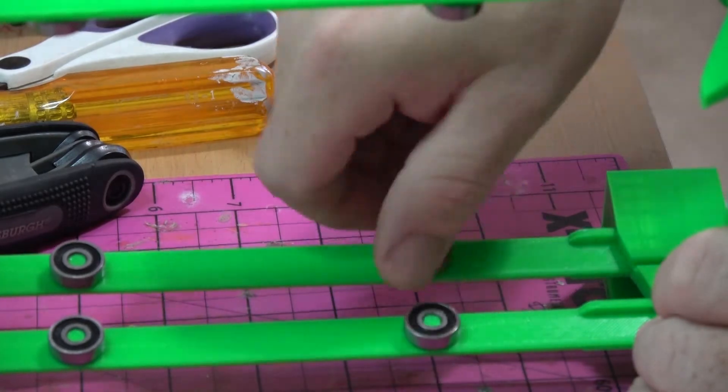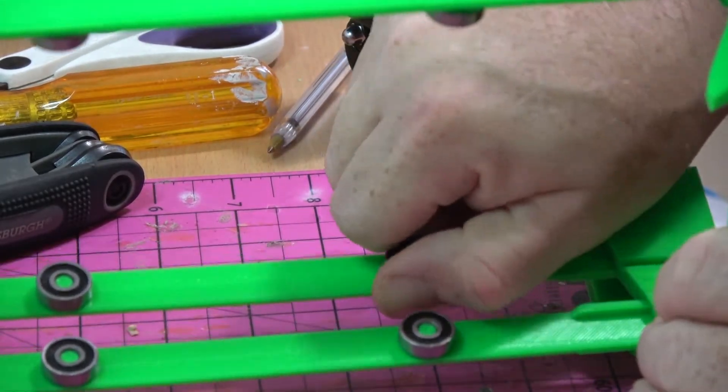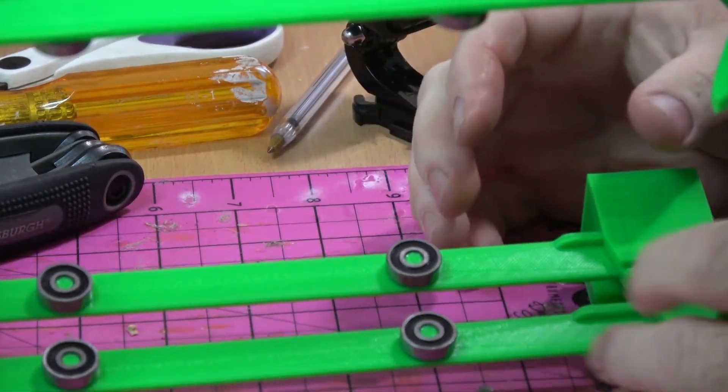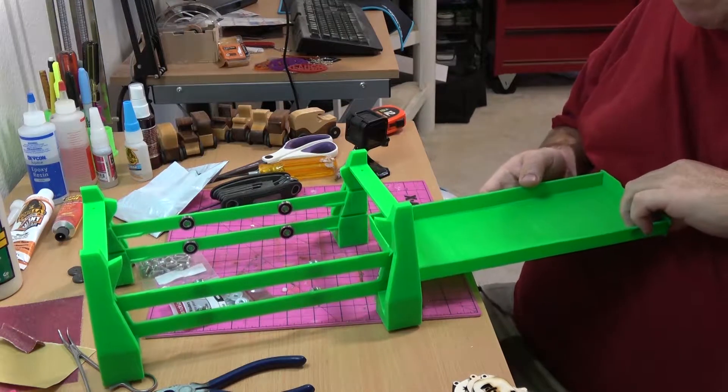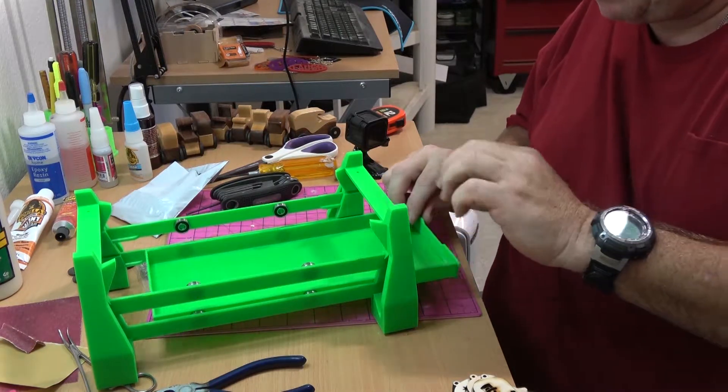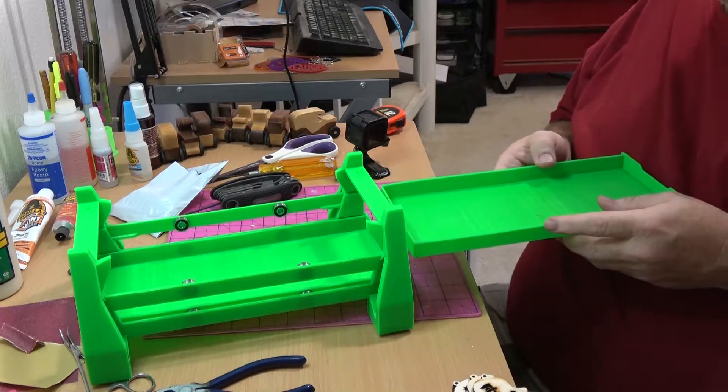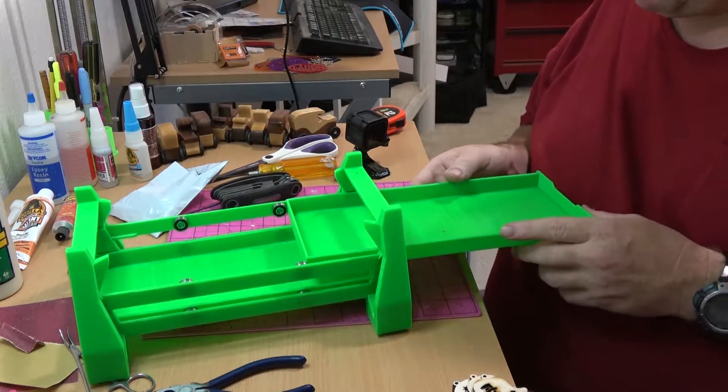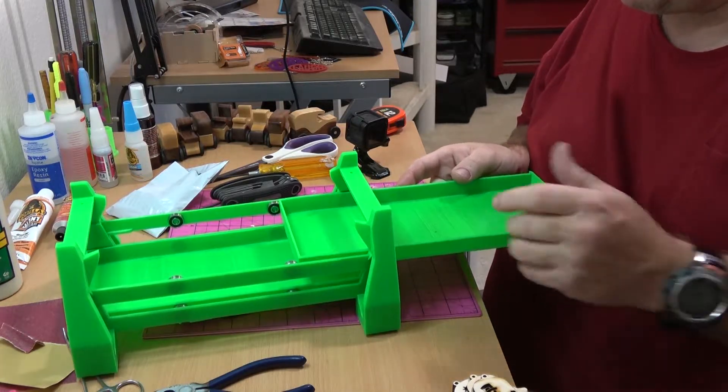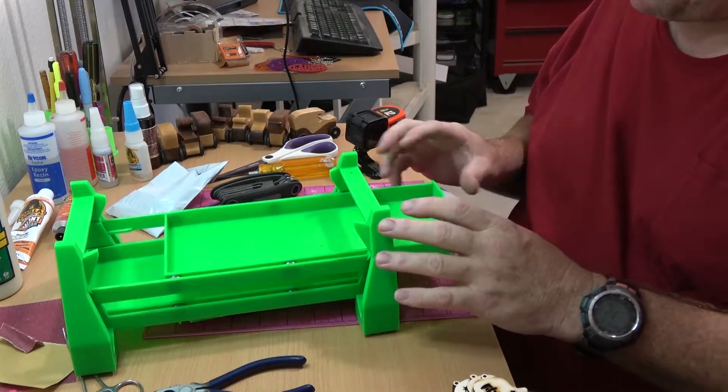You do need some hardware, some of that is bearings. These bearings aren't standard skateboard bearings, they do tell you what you need in the thing listed in Thingiverse, I'll give a link below. With all the bearings in I simply test fitted the drawers to make sure they all fit together. They're a little snug but should wear in over time.